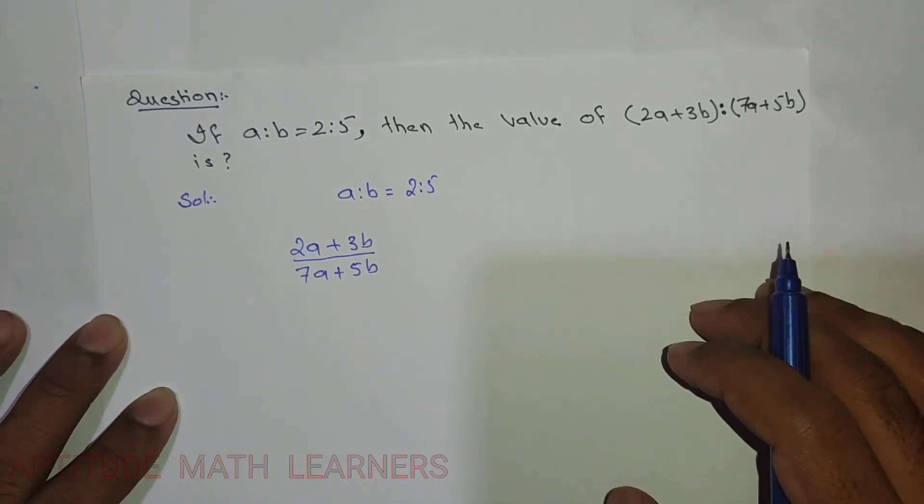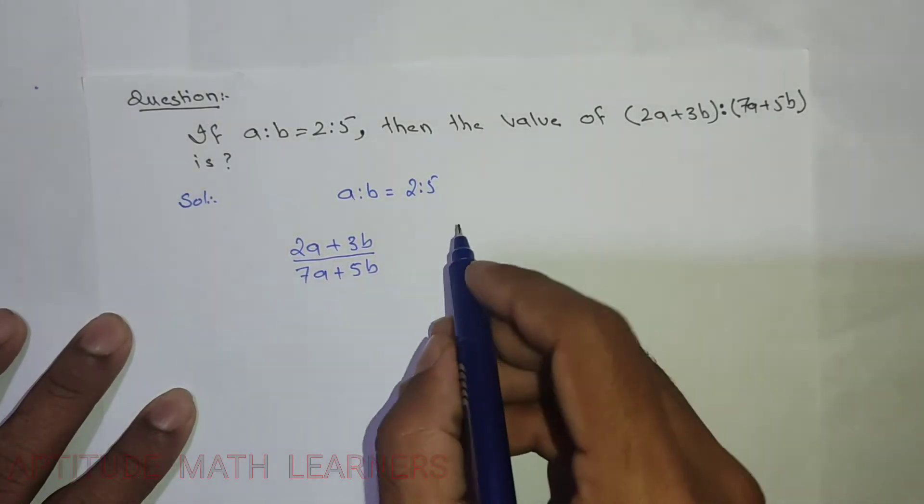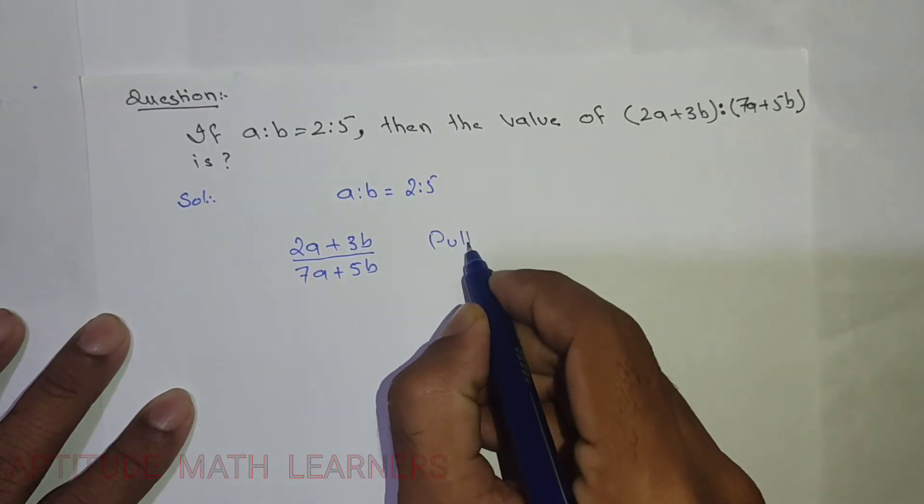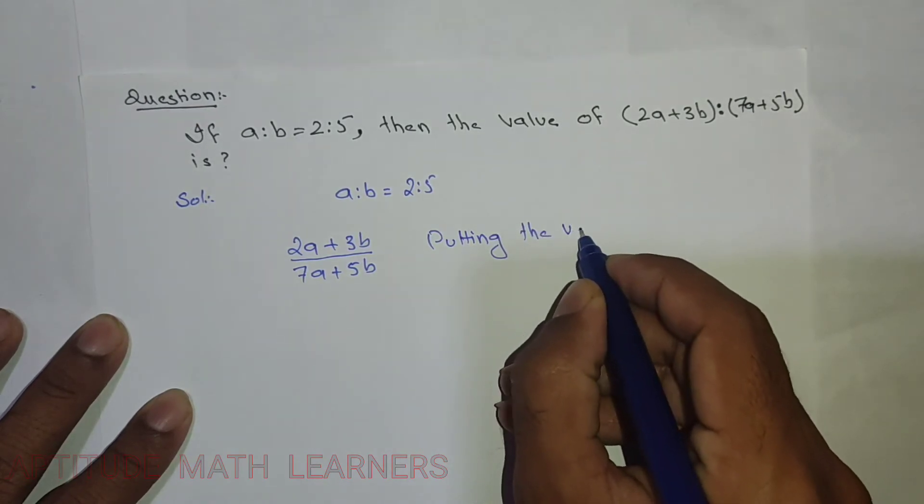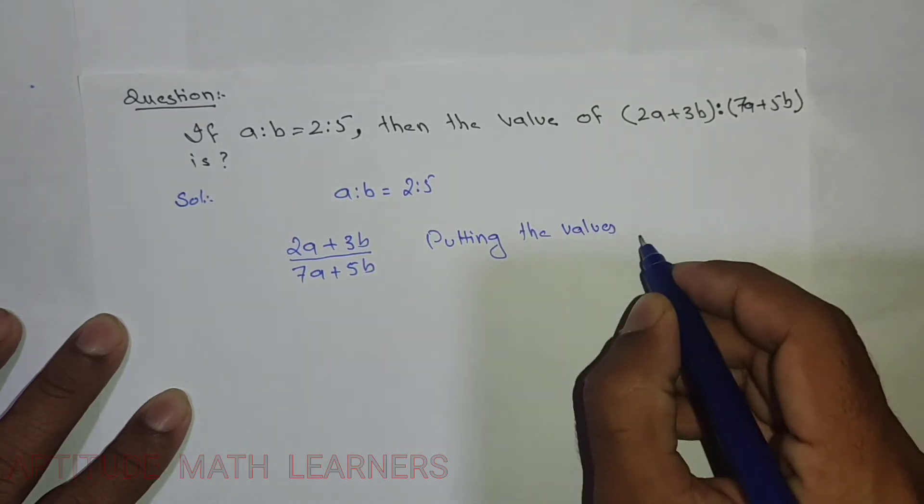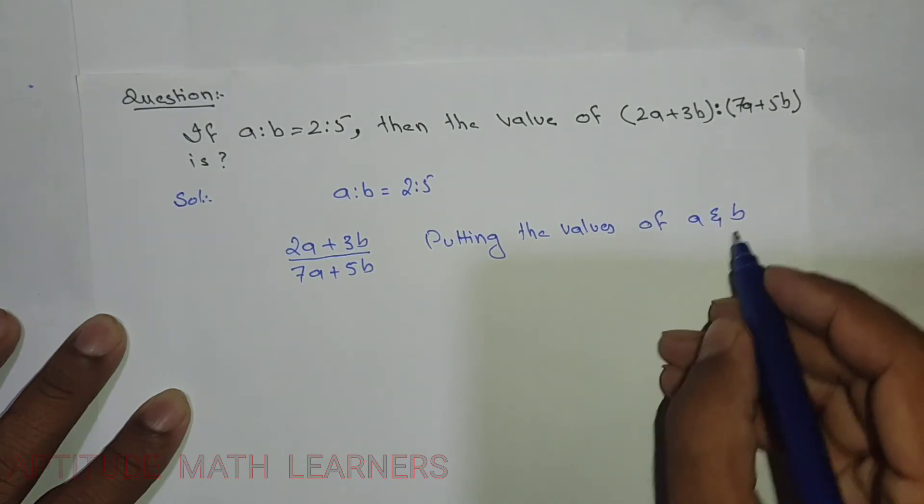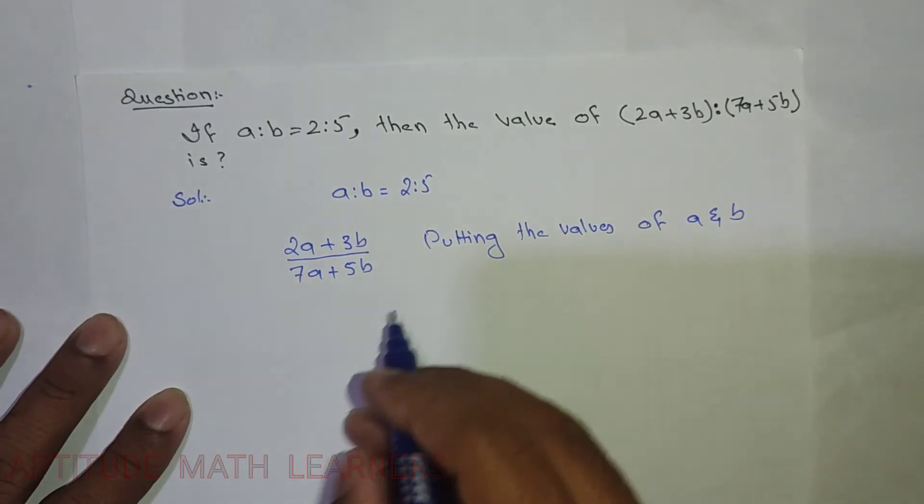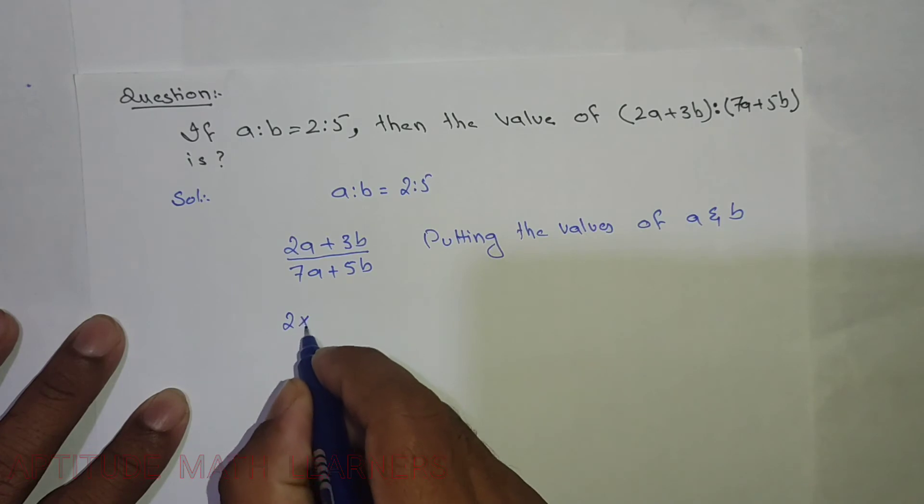Now putting the values of a and b, which is 2:5, we get (2×2 + 3×5)/(7×2 + 5×5).